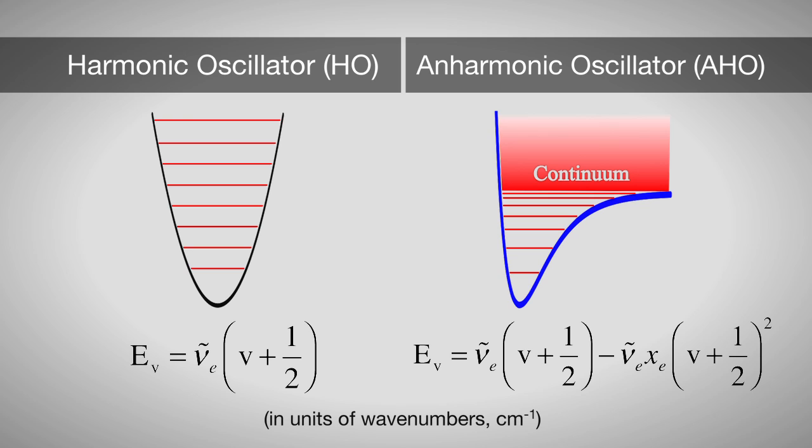To correct our model, we add an anharmonic correction term. The equations for the harmonic and anharmonic oscillators can be seen here. Notice that the anharmonic expression contains the harmonic expression. Here, nu e is the vibrational frequency of the molecule at its equilibrium bond length, and nu e x e describes the degree of anharmonicity in our potential. The spectral analysis that we will perform will show how close, or not close, HCl is to a harmonic oscillator.